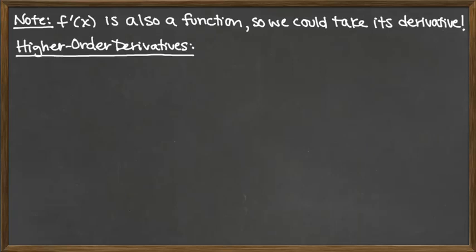When we start with a function f of x and we take its derivative, f prime of x is also a function. And so we could continue to take the derivative by just taking the derivative of our new function f prime of x. So doing this process gets us into what we call higher order derivatives.